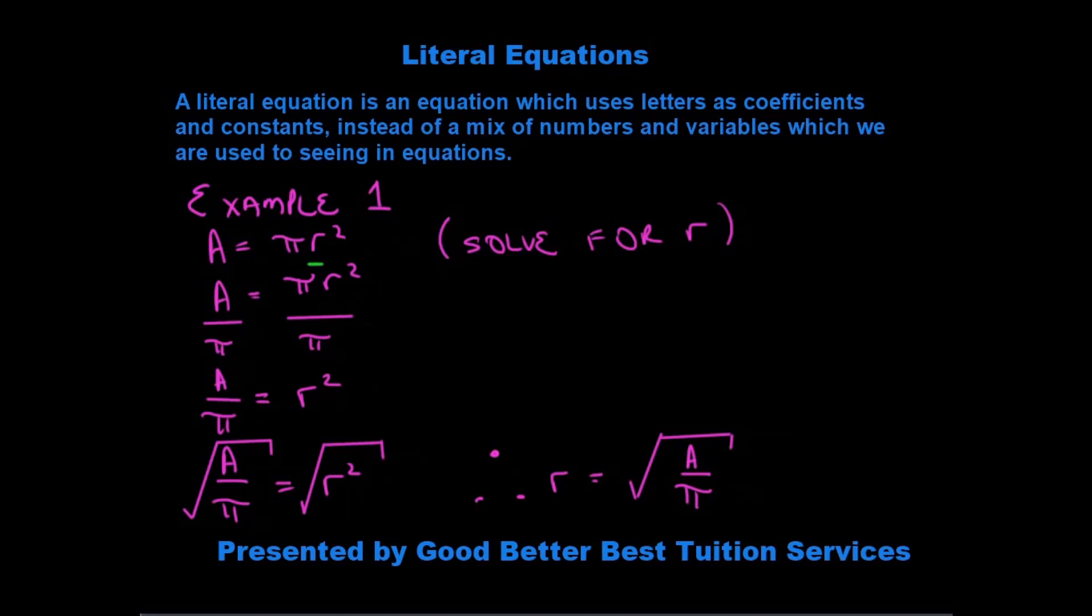And if we look at what we are given, we need to see how can we isolate the r. So the first step would be to divide by pi. And when we divide by pi, we have a over pi is equal to r squared.